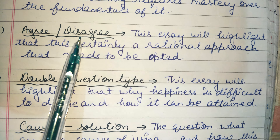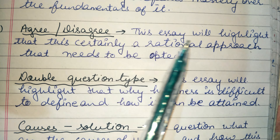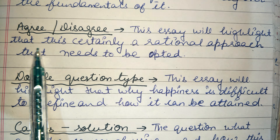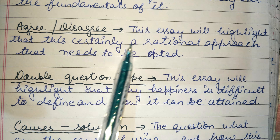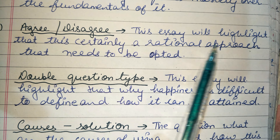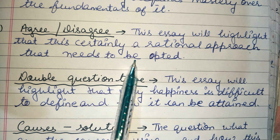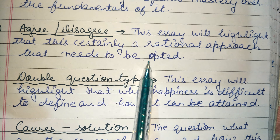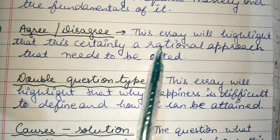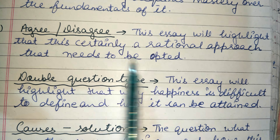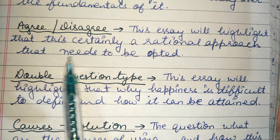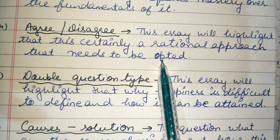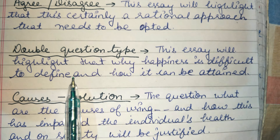For agree and disagree, we write: 'This essay will highlight that this is certainly a rational approach that needs to be opted.' Rational approach means this is the correct stance. So either you say you agree with the statement, or you disagree — either way, that position must be clearly accepted.